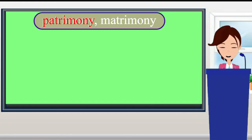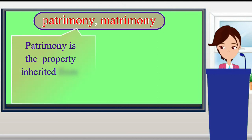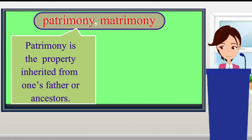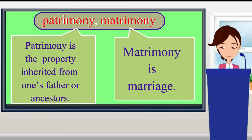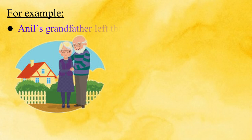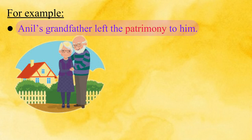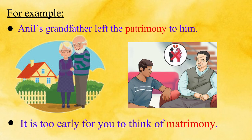Next are 'patrimony' and 'matrimony.' Patrimony is property inherited from one's father or ancestors. Matrimony means marriage. For example: 'Anil's grandfather left the patrimony to him.' 'It's too early for you to think of matrimony.'